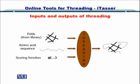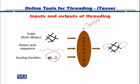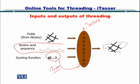We are going to use I-TASSER. The scoring function used is the one developed by the I-TASSER team at the Yang Lab. You only need to input the amino acid sequence, as the fold libraries are public and available.